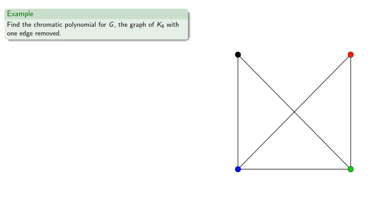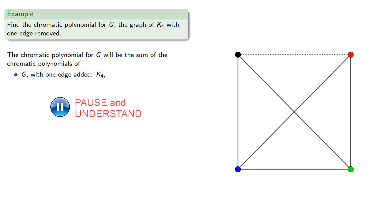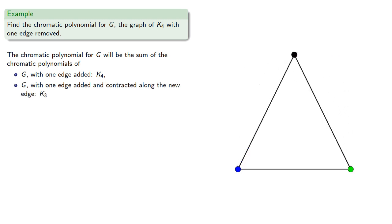So the chromatic polynomial for g will be the sum of the chromatic polynomials of g with one edge added, which gives us K4, and g with one edge added and contracted along the new edge, which gives us K3.